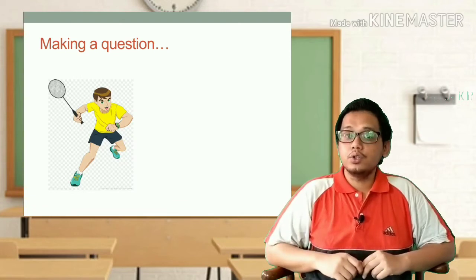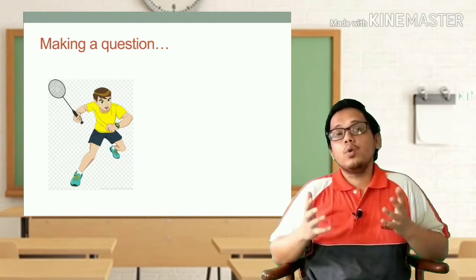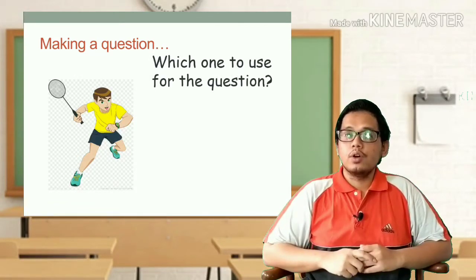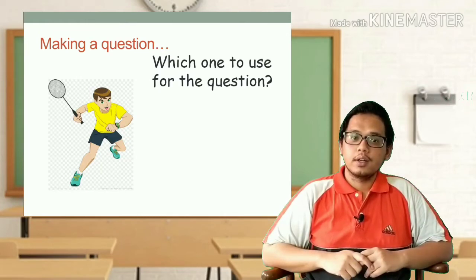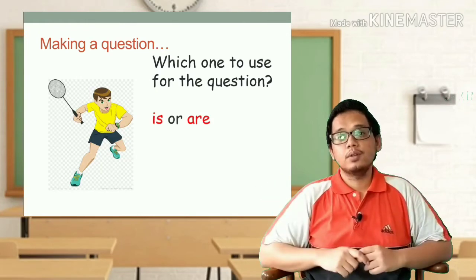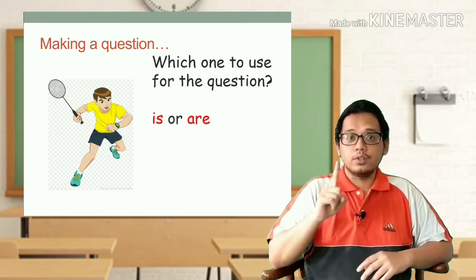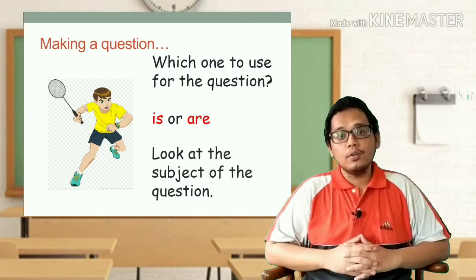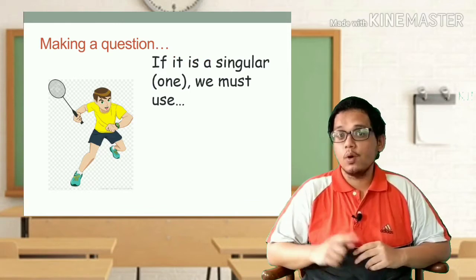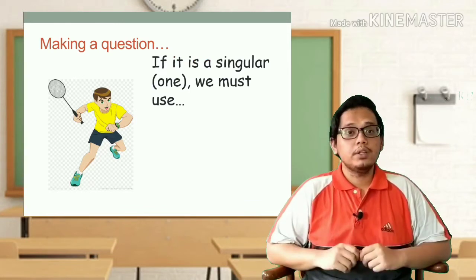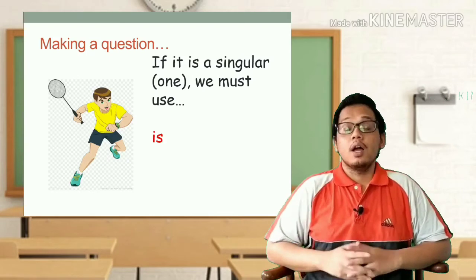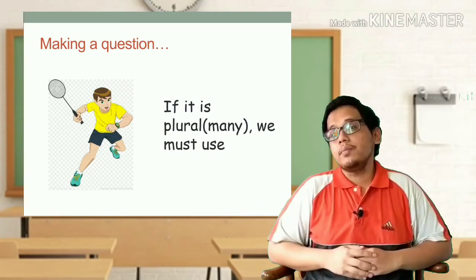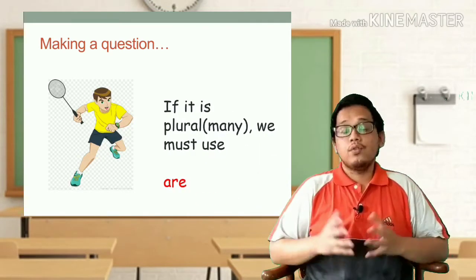Now I will teach you how to make a question. When we want to make a question, we have to think which one to use — is it 'is' or is it 'are'? First we have to look at the subject of the question. If the subject is singular, meaning one, we must use 'is'. And if it is plural, which means many, we must use 'are'.